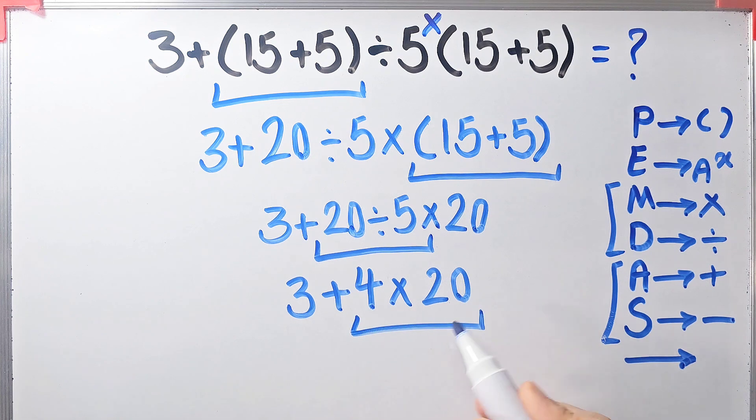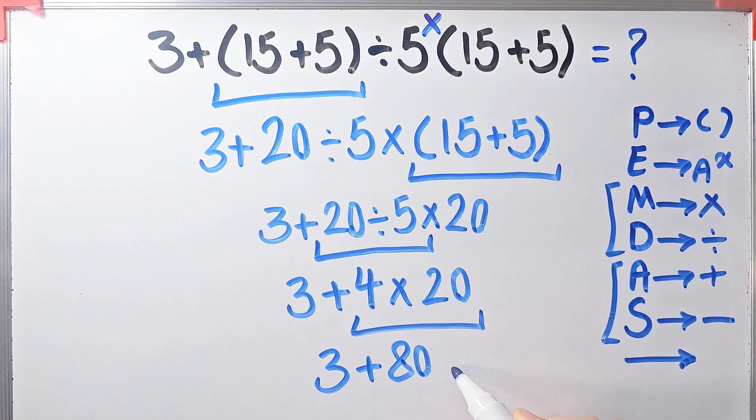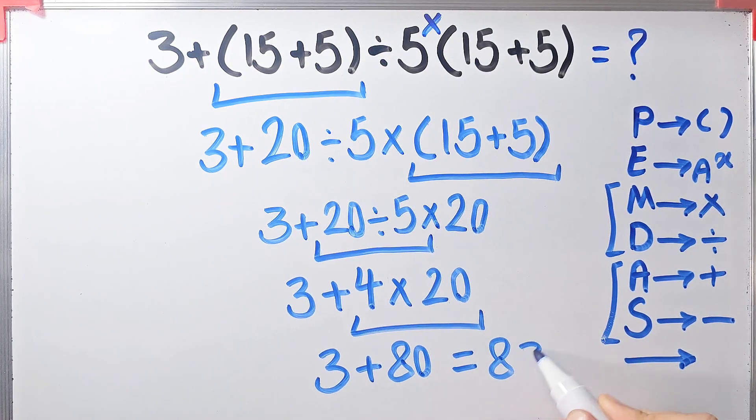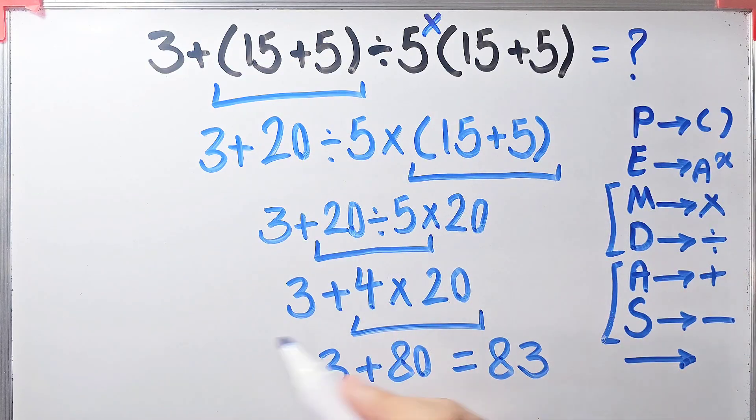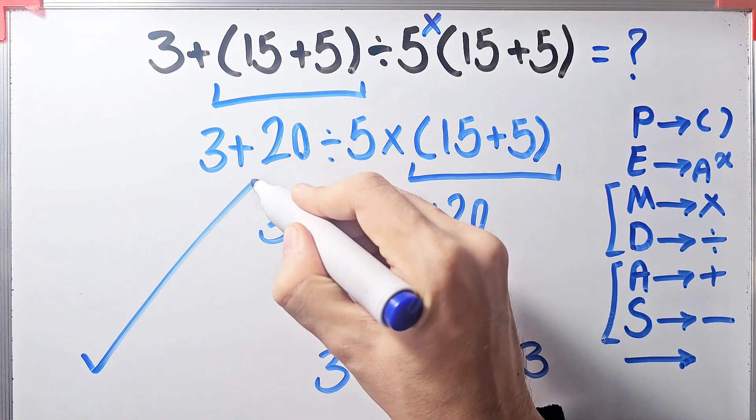Now we have 3 plus 80. 3 plus 80 equals 83, the final answer of this question. Thanks for watching guys, please subscribe to the channel and leave a comment. Goodbye.